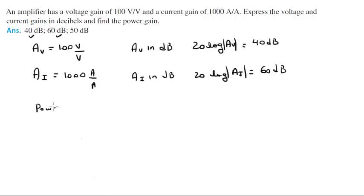Now the power gain, also known as Ap, is given by Av times Ai, which gives you 100 times 1000, which is 100,000. And that is amps times volts, which will be watts over watts.